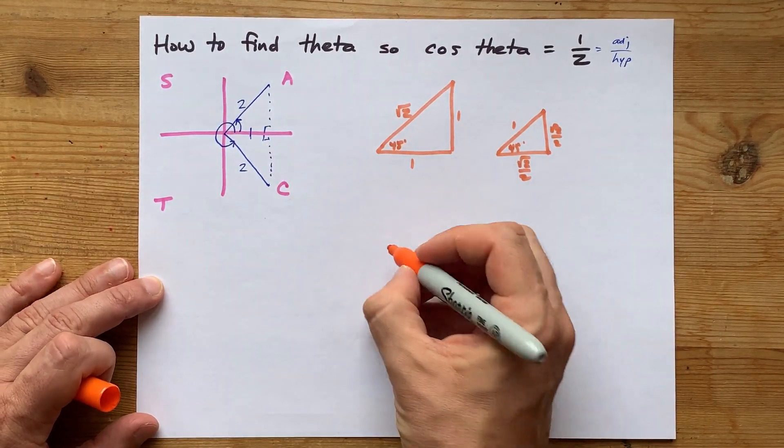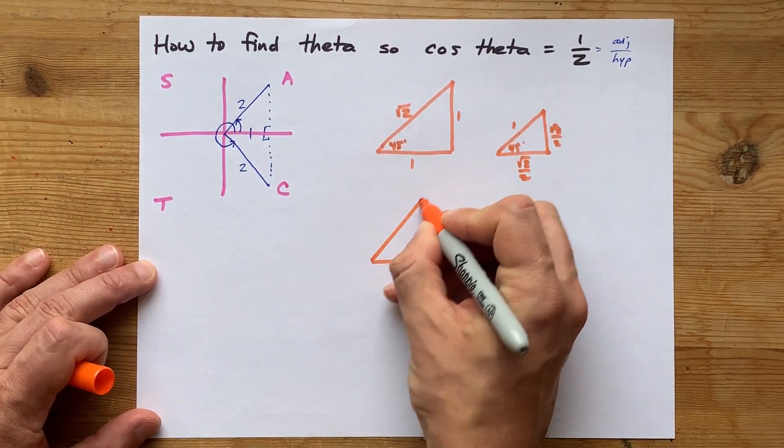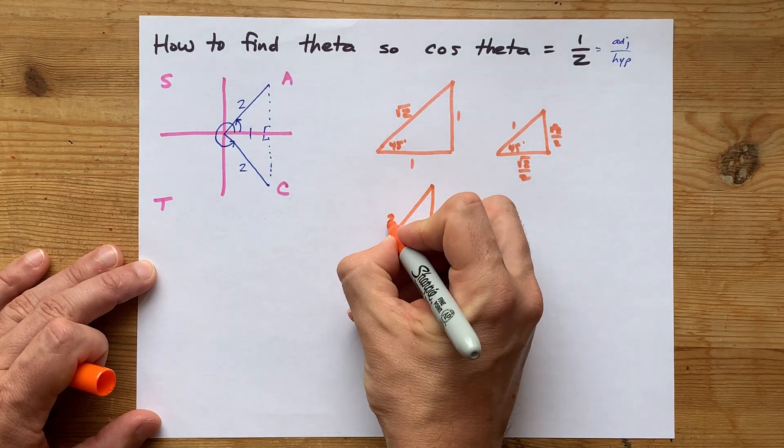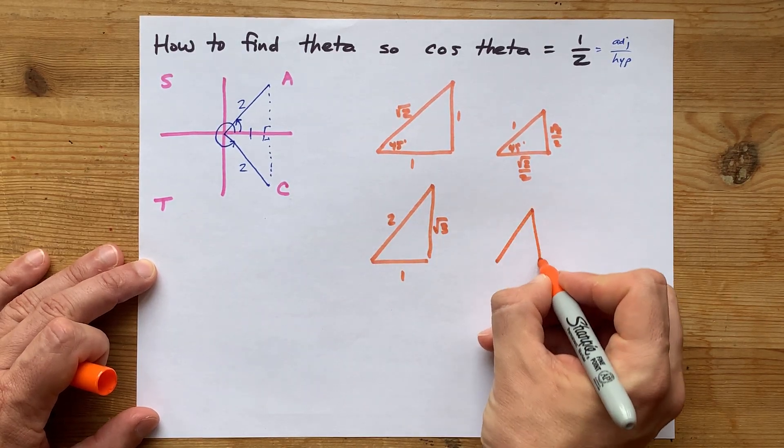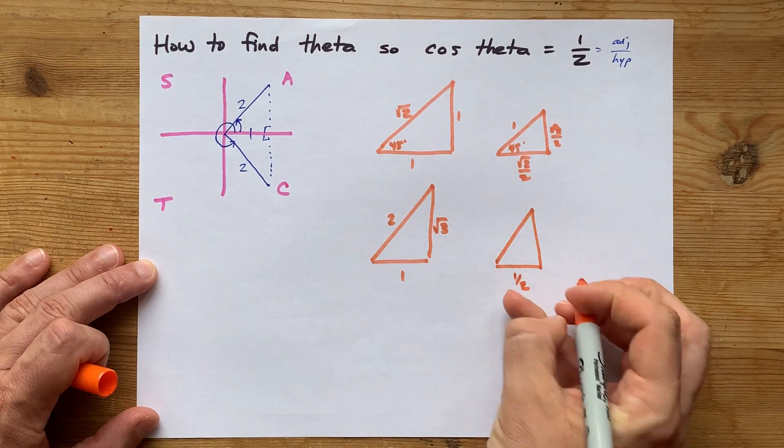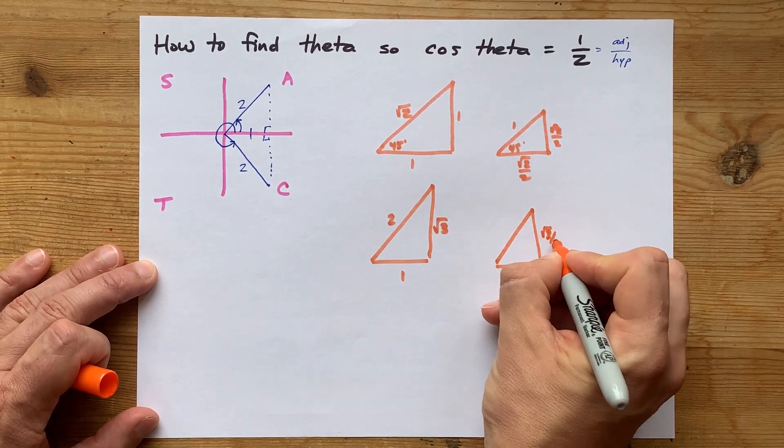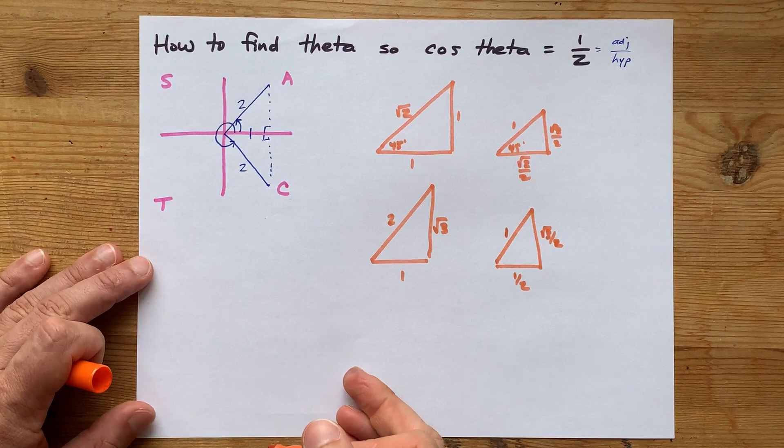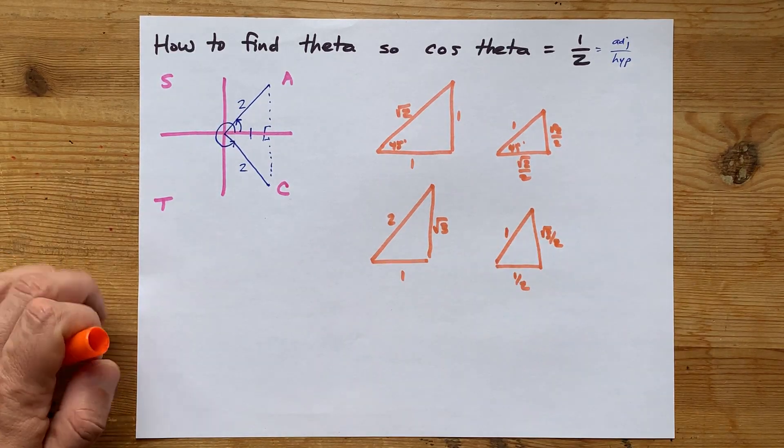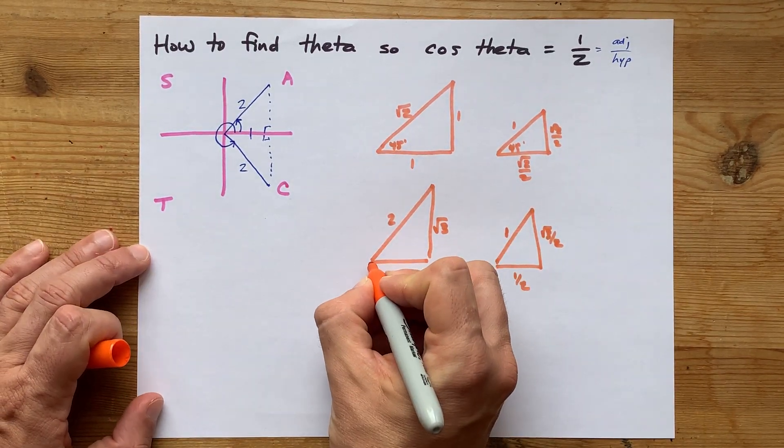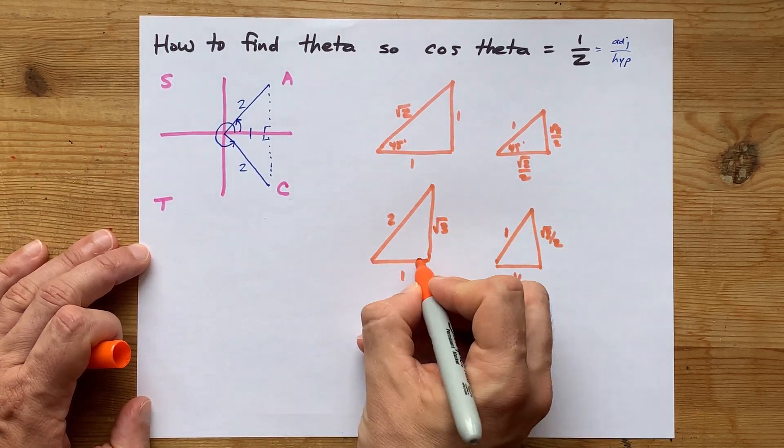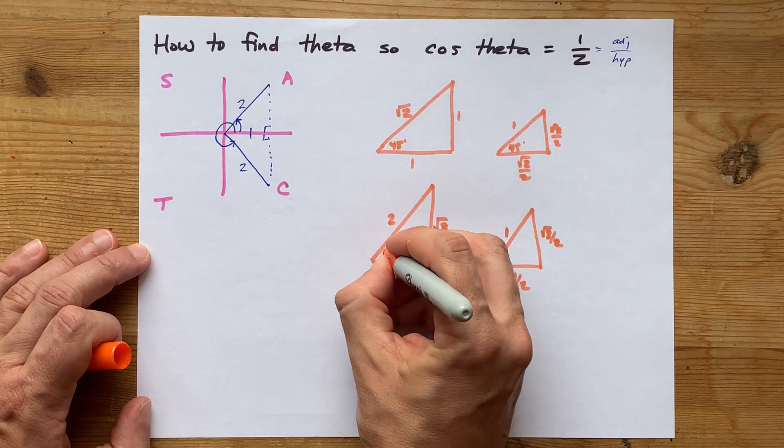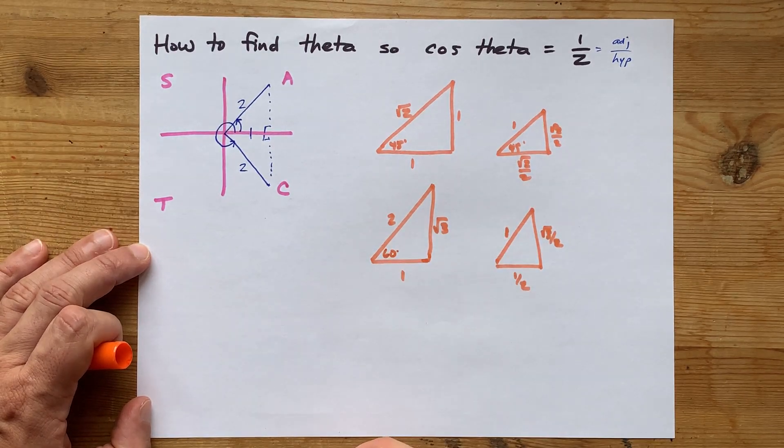The special triangle I'm asking you to recall here is 1, 2, and root 3. Your teacher may have taught that to you as 1 half, root 3 over 2, and 1. The point is that between the side lengths that are 1 and 2, the adjacent side of 1 and the hypotenuse of 2 is a 60 degree angle.